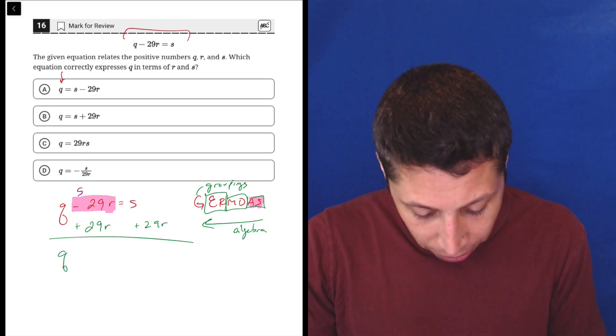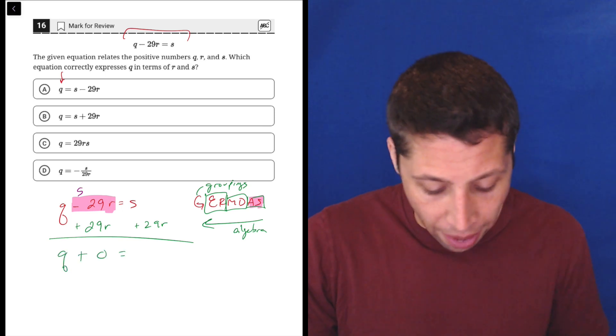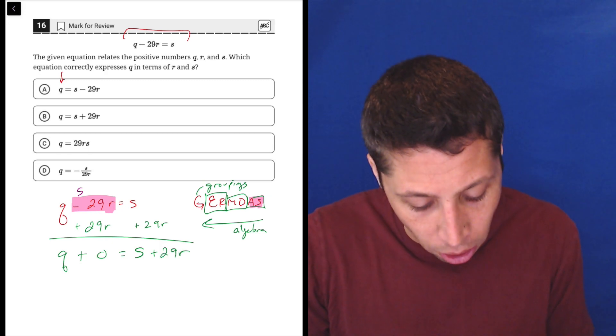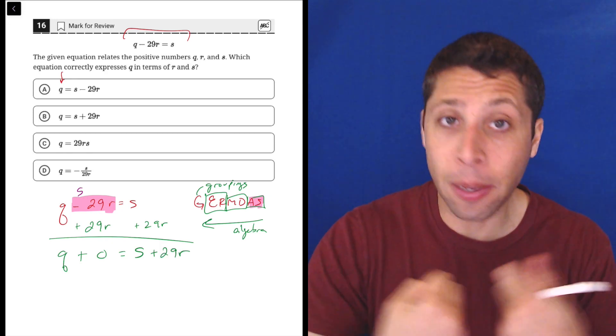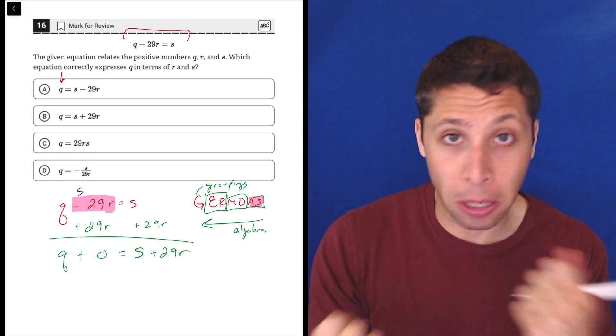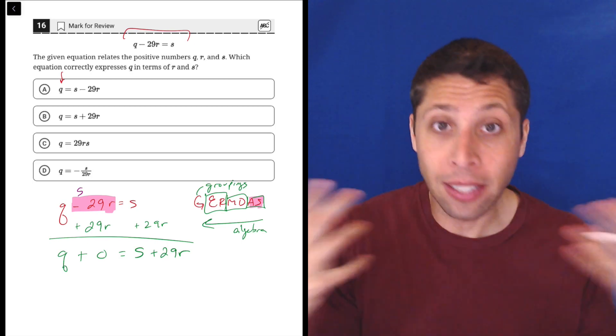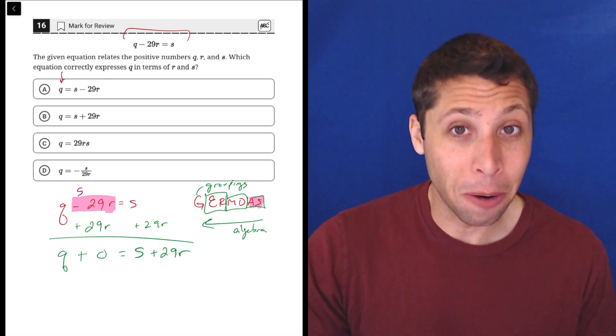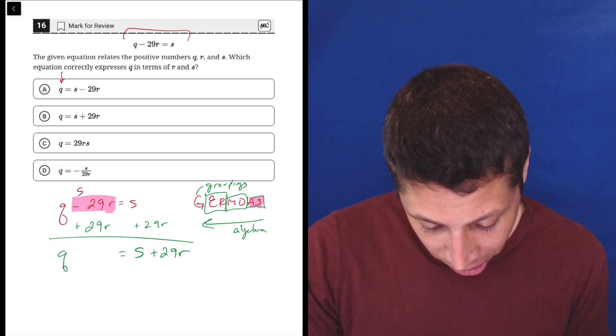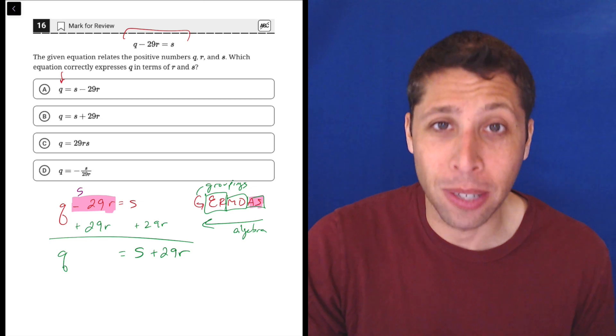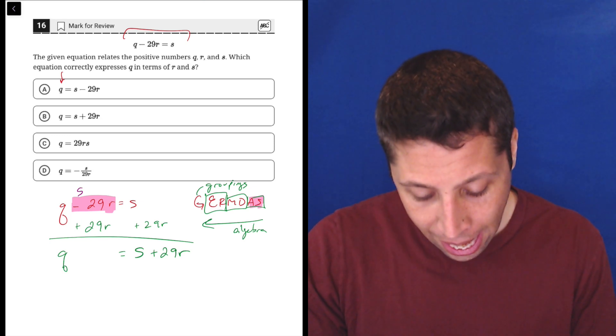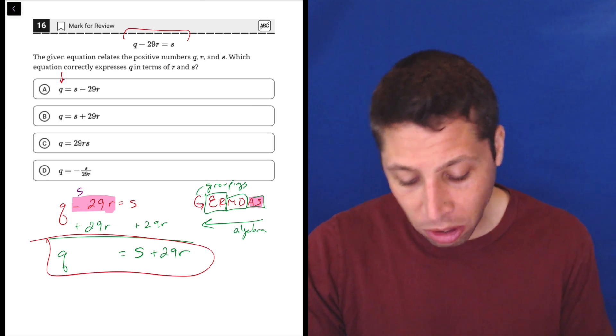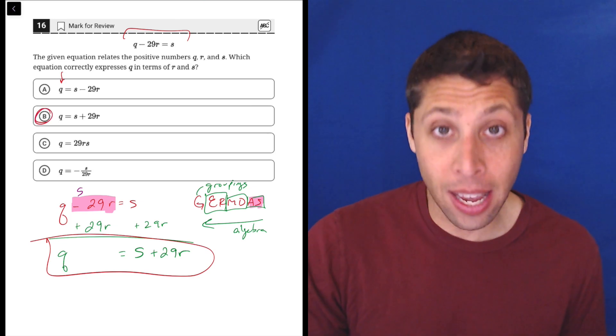So what we really have here is Q plus zero, and then on the right side we have our S that we had before, but now plus 29R is off to the side. We can't combine them because S and R are different variables so they don't mix, but they still are going to now be on the same side because we moved it over. The thing is we wouldn't put the zero because Q plus zero is just Q. The zero doesn't have any effect when it's addition and subtraction, so we just get rid of it. And now we have what we were looking for. We have an equation where Q is alone, and choice B is the answer.